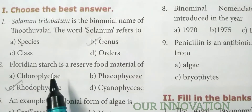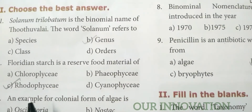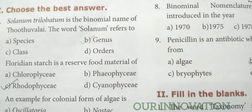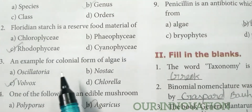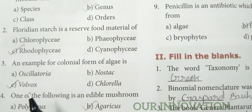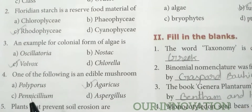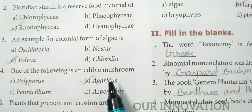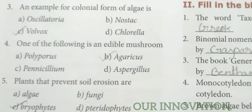Floridian starch is a reserve food material of Rhodophyceae. An example for colonial form of algae is Volvox. One of the following is an edible mushroom — Agaricus.